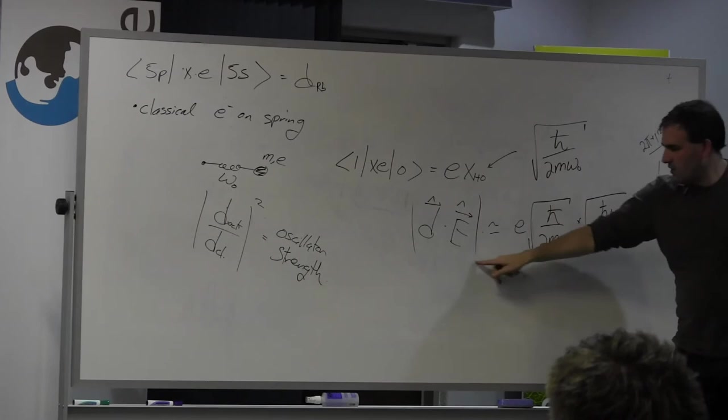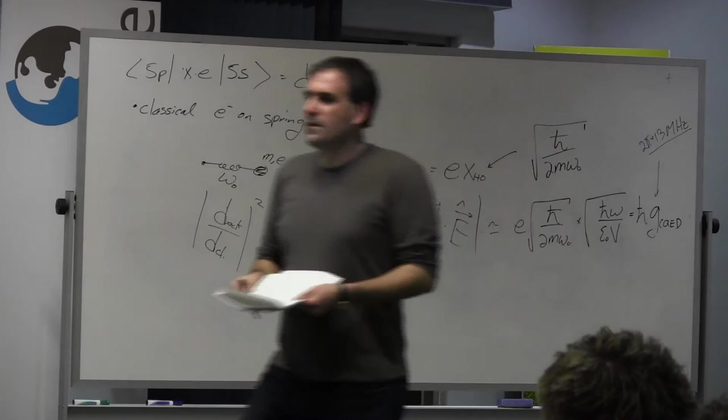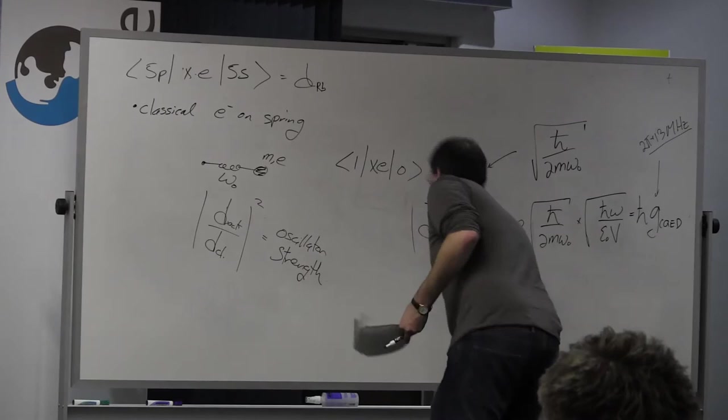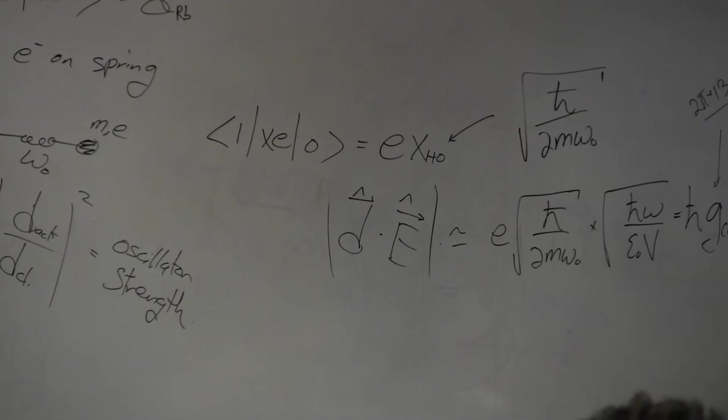The strength of this dipole moment here, which we've related to this classical value, tells us not only how strongly does the atom couple to the cavity field, but it also tells us how strongly the atom couples to all the other electromagnetic fields. Which is to say I can now calculate for you the spontaneous emission rate of my atom. I don't have to look that up either.